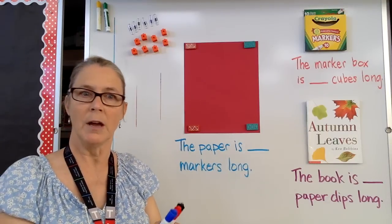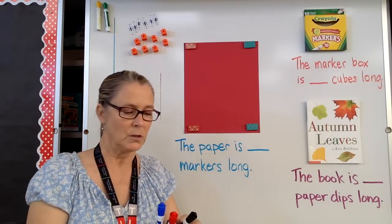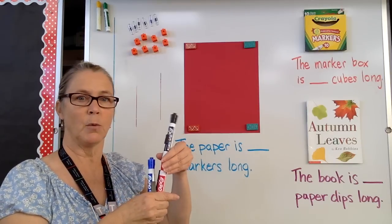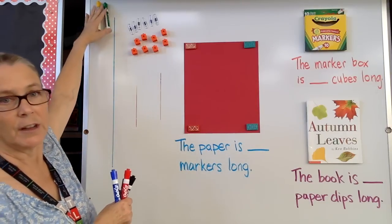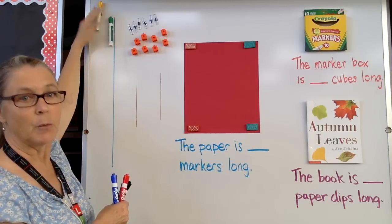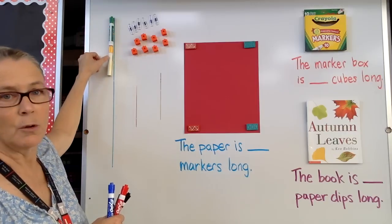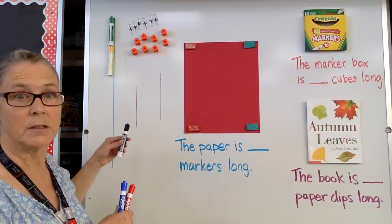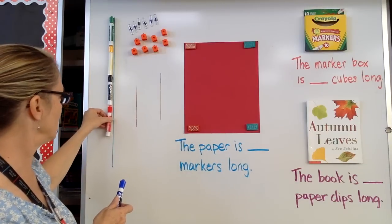Let me model how we use our non-standard units to measure a line, and then I will demonstrate how we measure other objects. When we use our non-standard objects like markers, we're going to line them up end to end — that means there will be no gaps and no spaces; they have to touch end to end. So let's go ahead and start with our line. We'll start here at the top, making sure that the top of the marker is right at the top of the line. Then I will add the other markers one at a time, directly behind and touching, making sure they're touching.